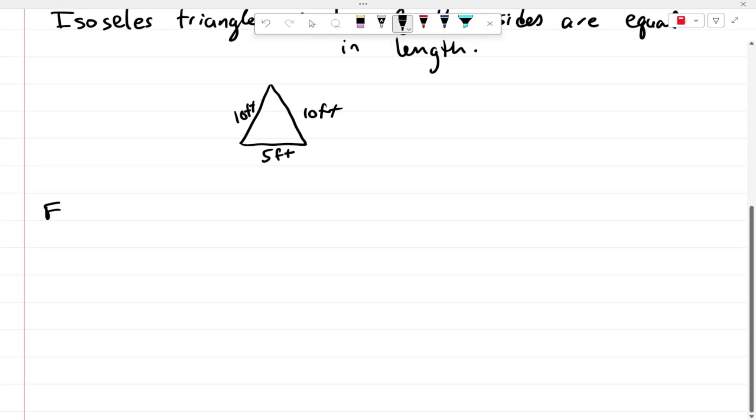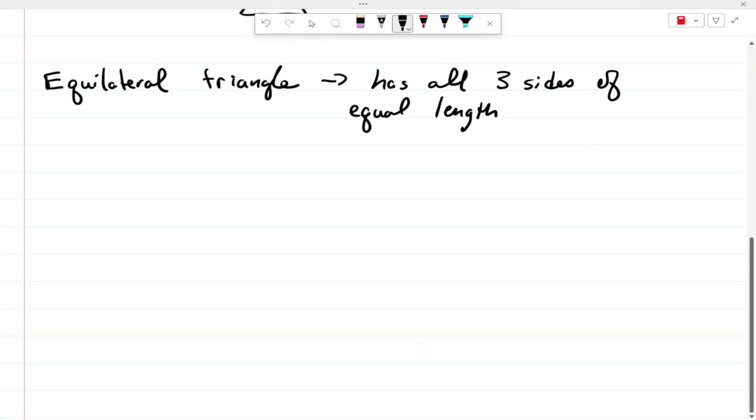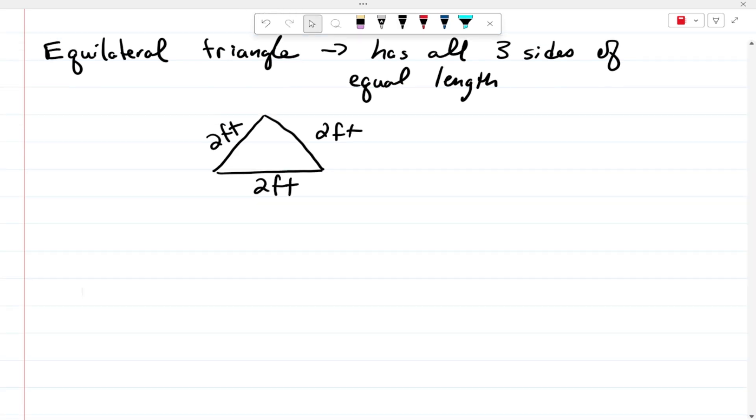We also have the equilateral triangle, and this is when we have all three sides of equal length. A picture of that would be something like this, where they are all the same exact length.